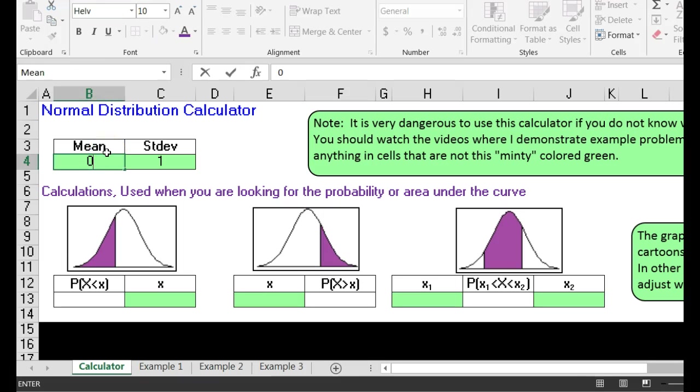so I input a zero which is already there. A standard deviation of one which is already there, but let's put it in. Hit the enter button. I want to know the area between a z-score of zero and a z-score of 1.3. I've got three little purple areas up here. Consider this purple jello. This one tells me the probability to the left, this one tells me the probability to the right, this one tells me the probability between two values. So I'm going to input a zero and I'm going to input a 1.3.